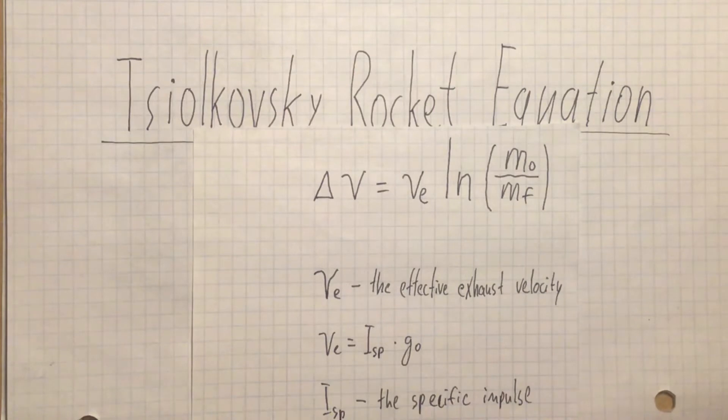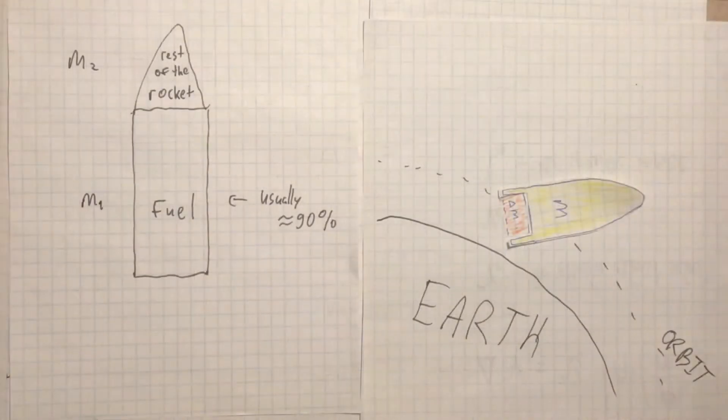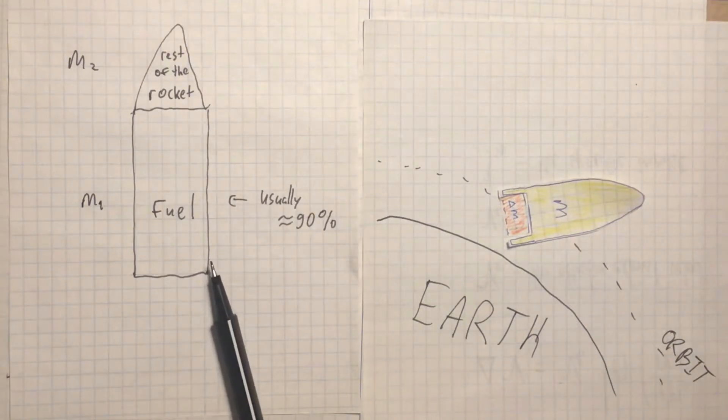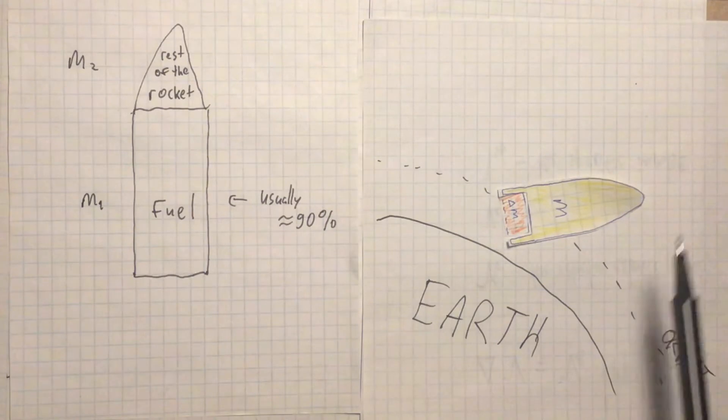The effective exhaust velocity can also be written as the specific impulse multiplied by standard gravity. This equation is mainly used to calculate what percentage of the mass of the rocket should be solely rocket fuel in order for the rocket to reach the orbit of the Earth, or move from one orbit to another.